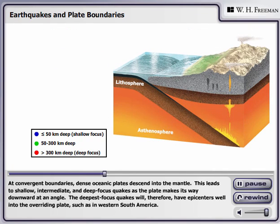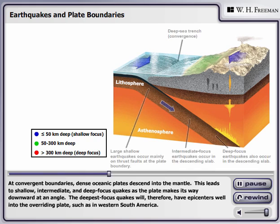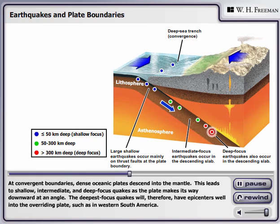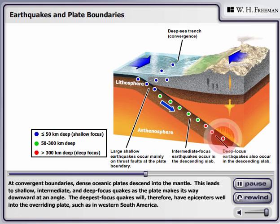At convergent boundaries, dense oceanic plates descend into the mantle. This leads to shallow, intermediate, and deep focus quakes as the plate makes its way downward at an angle. The deepest focus quakes will therefore have epicenters well into the overriding plate, such as in western South America.